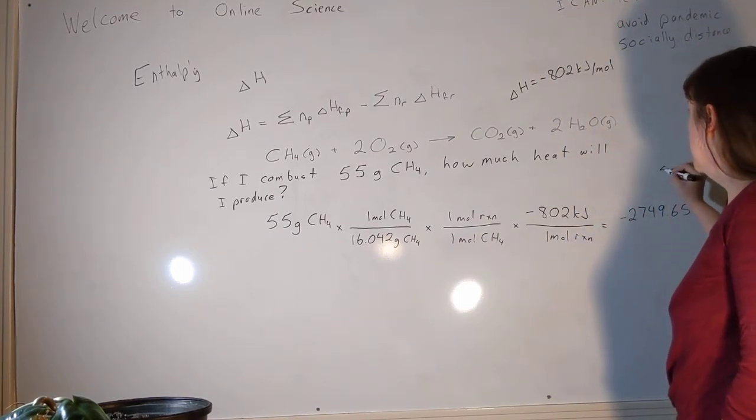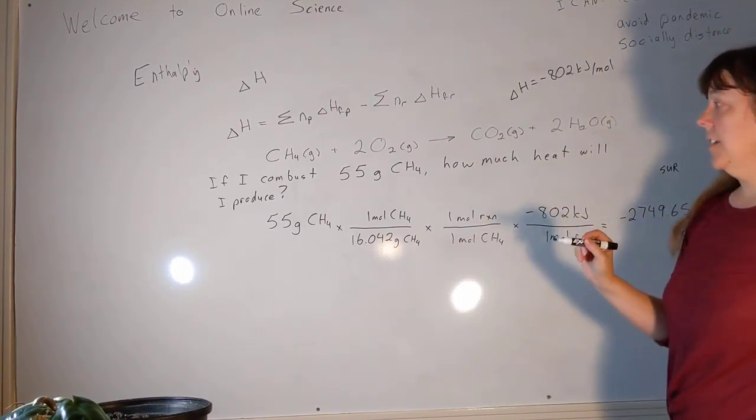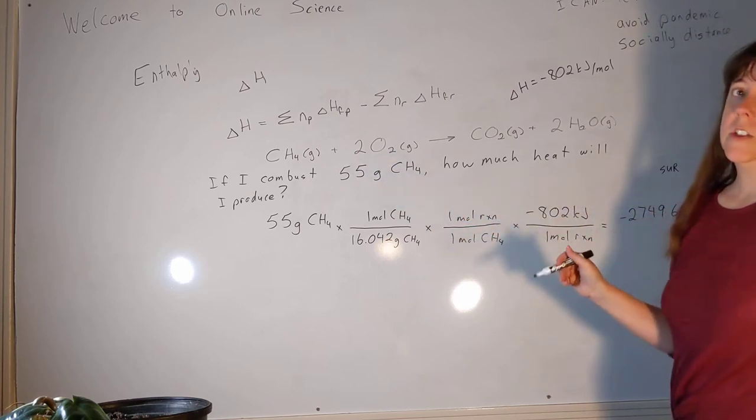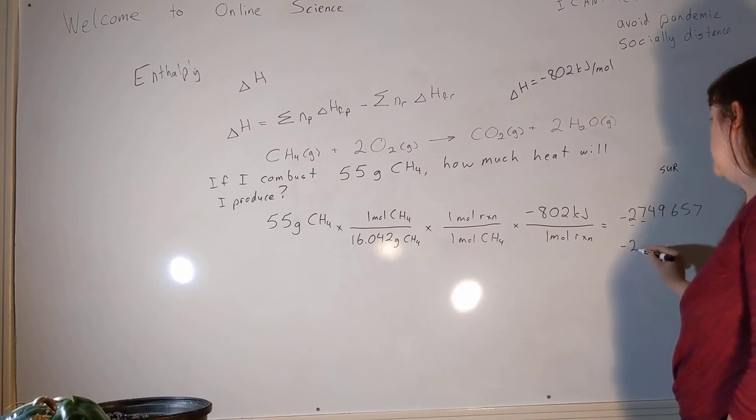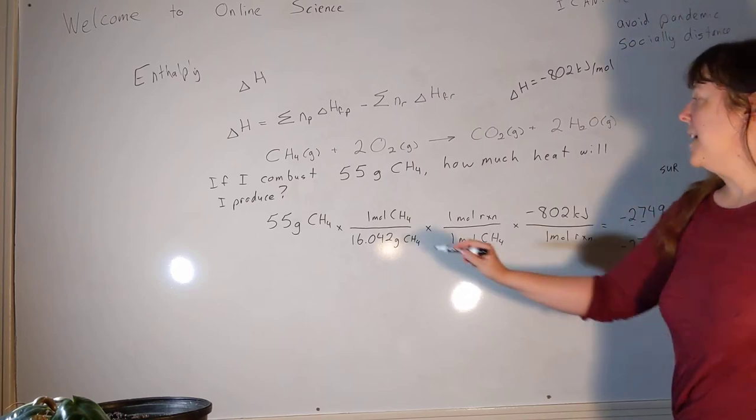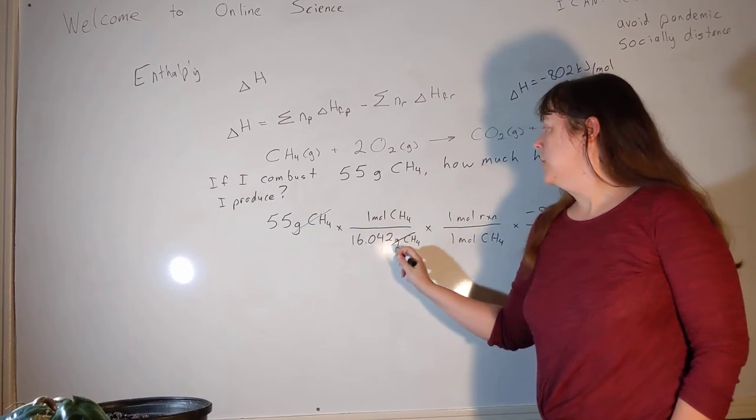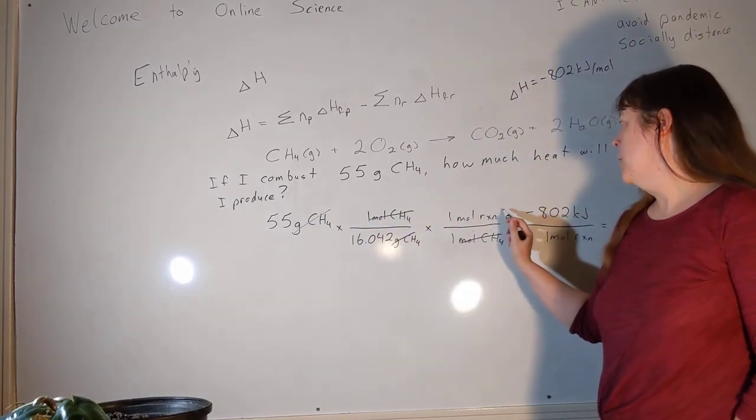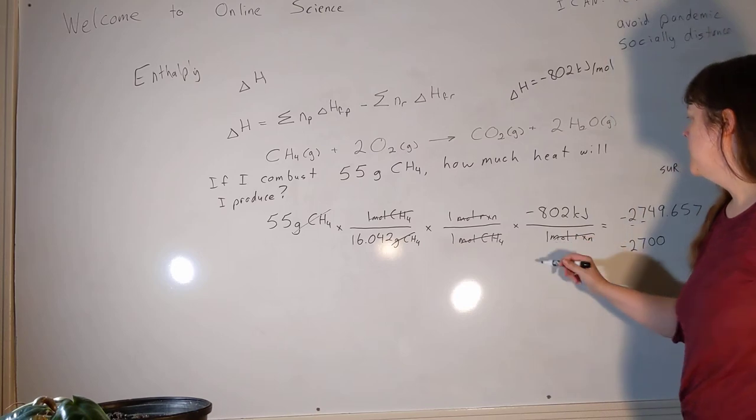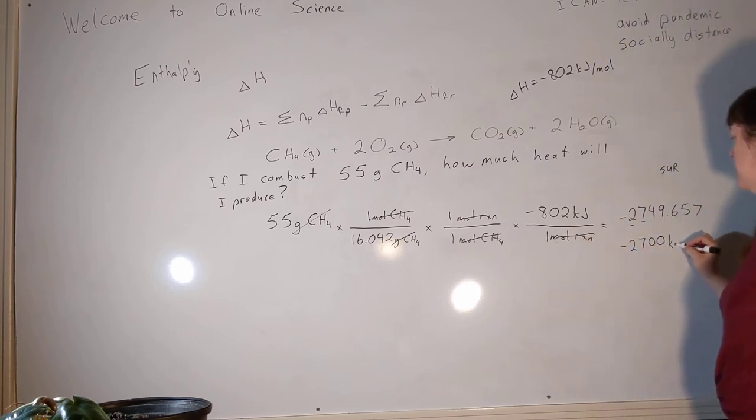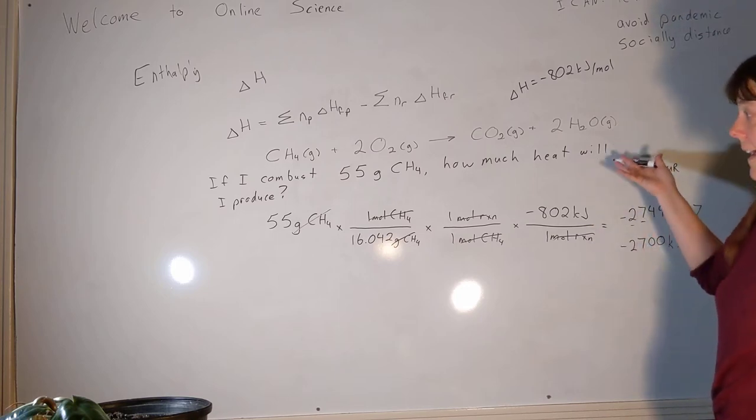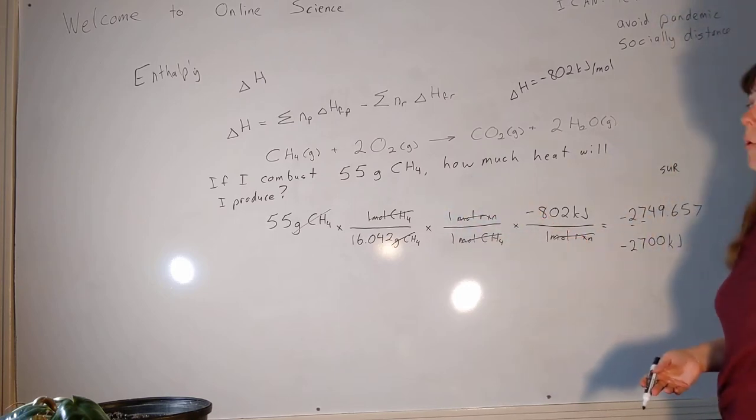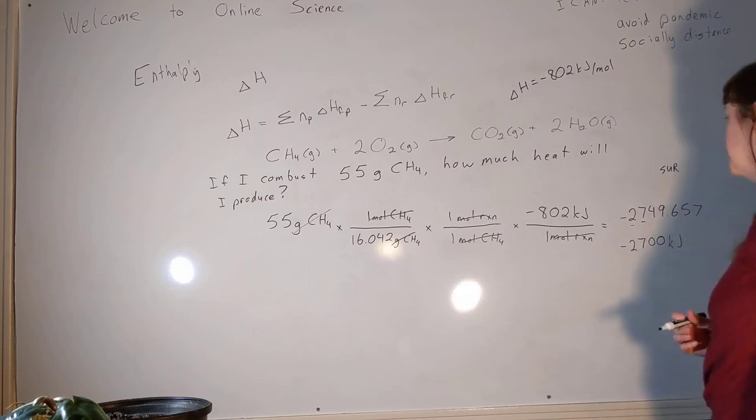But are we done? Nope, we're not done. How many sig figs does this final answer get to have? As is often the case, it's determined by the first number we started with and it's only two, so negative 2700. If we cancel everything out, grams cancel grams, moles of CH4 cancel moles of CH4, moles of reaction cancel moles of reaction, and we're left with kilojoules. So that's the amount of heat that's released. Those are our units, and this is an exothermic reaction, and we had well over one mole's worth of methane, so it's not a surprise that we gave off quite a lot of heat.